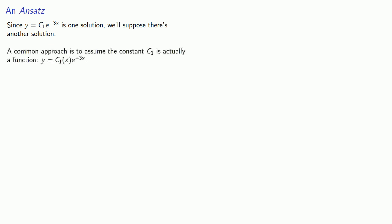A common approach is to assume that our constant C1 is actually a function, C1 of x. This is known as variation of parameters, and we'll have a lot more to say about it later.